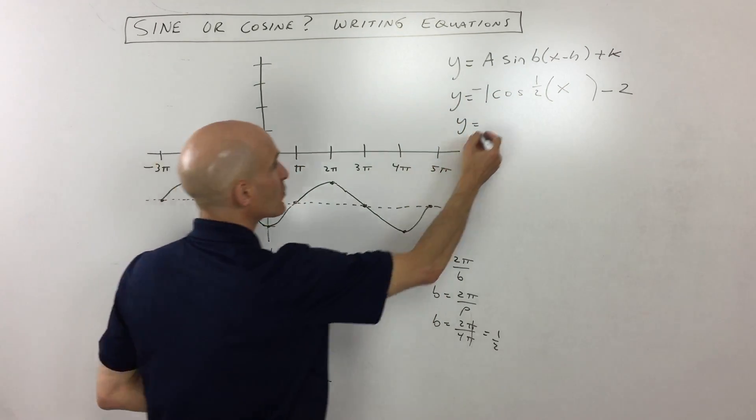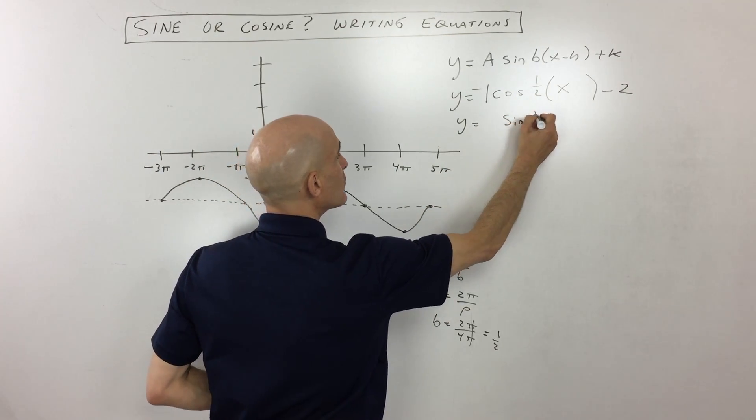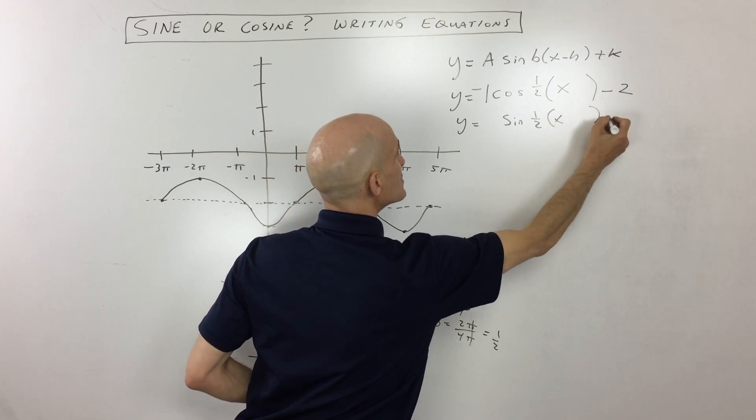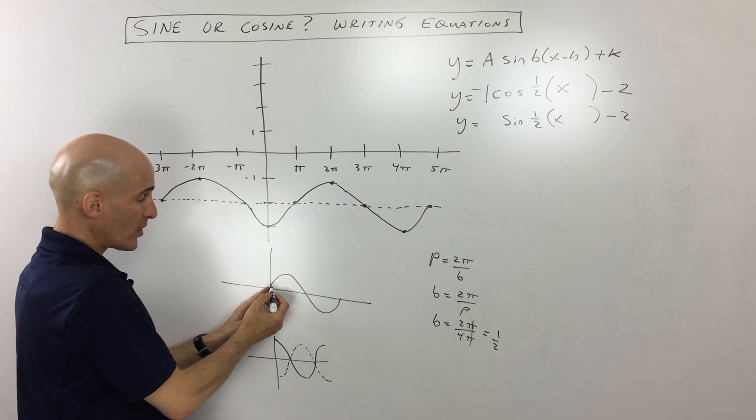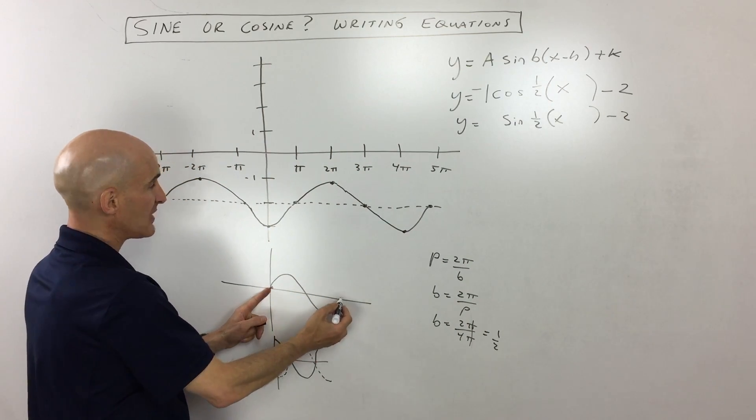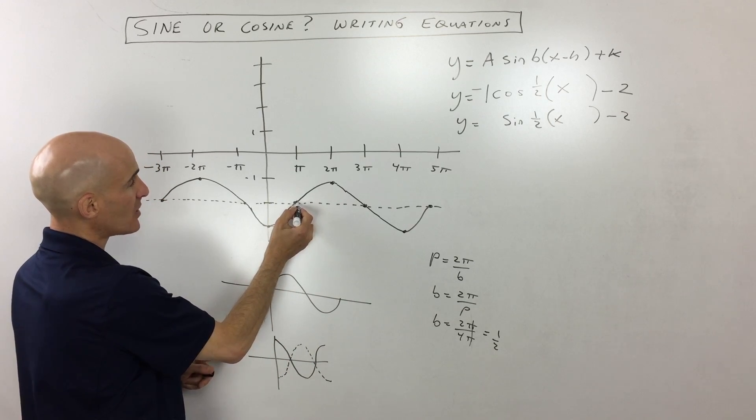The next one is, let's maybe take a sine graph now. So we're going to say sine, we still have the one half, we still have the negative two. Now remember, sine starts here at the origin, and it goes up, and then down and back up. So you can see this would be like a starting point. But what's happening is it's shifting to the right pi.